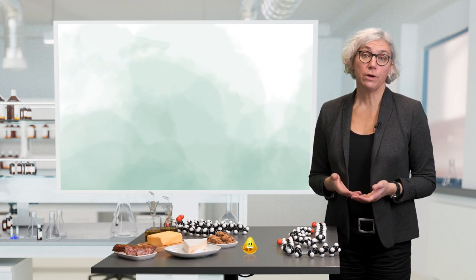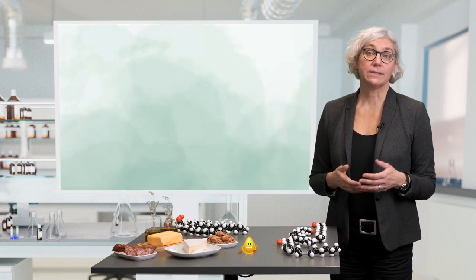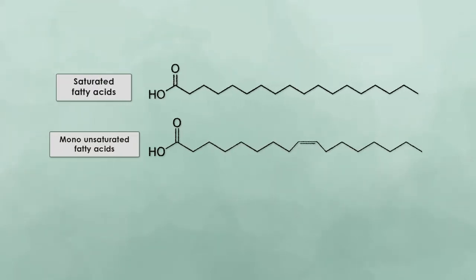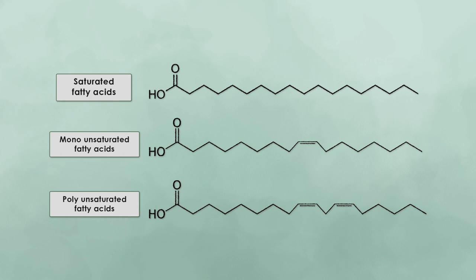Furthermore, we need to differentiate between saturated fatty acids, monounsaturated fatty acids and polyunsaturated fatty acids. Saturated fatty acids are straight chain structures with 100% single bonds. Monounsaturated fatty acids carry one double bond in the chain and polyunsaturated fatty acids carry more than one double bond in the chain.